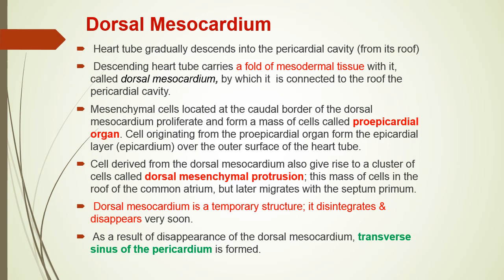It is a temporary structure and will disappear very soon, but it has two important masses related to it which develop from it. One we have already discussed is the proepicardial organ, which is a mass of cells that develops in the caudal part of the pericardium and serves as a source of epicardium and also as a source of coronary arteries.